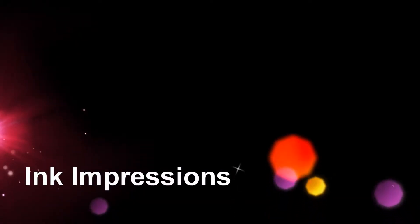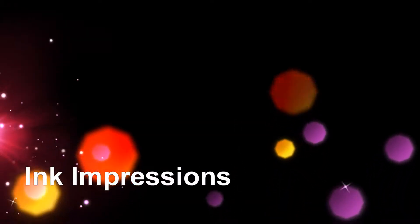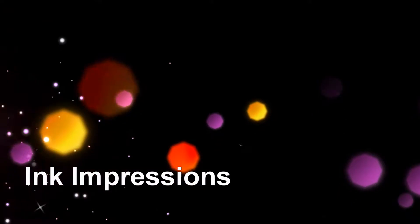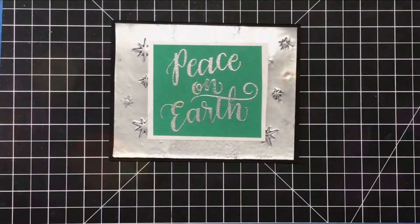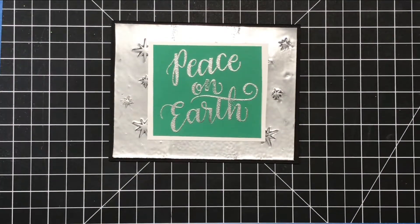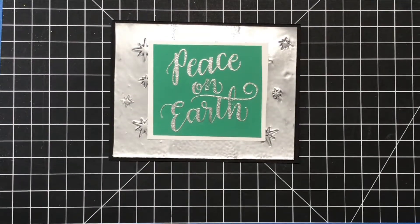Hi everybody, welcome to another episode of Ink Impressions. I'm Jennifer Shirk and today we are going to be talking about faux metal accents. You can see on the background here on this Peace on Earth card that I have put a few on here. I'm going to show you how to do this.